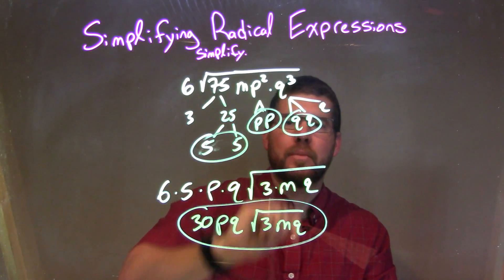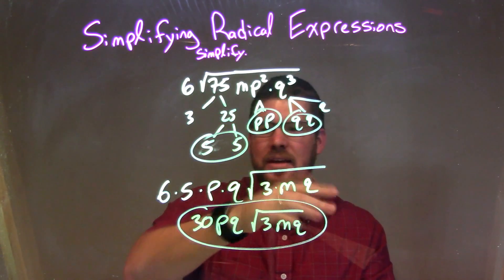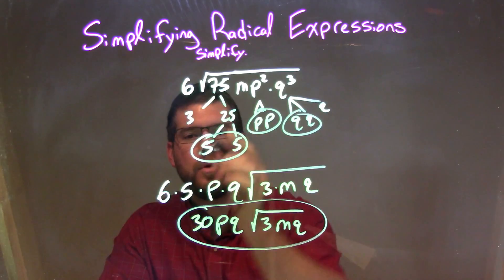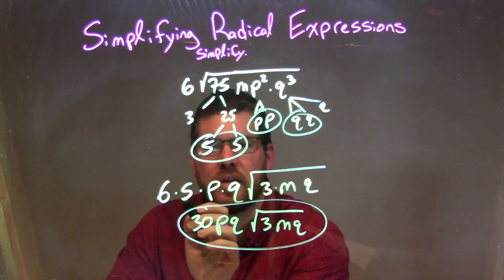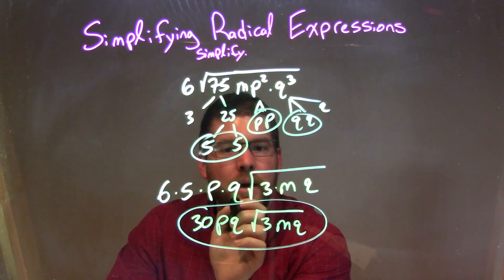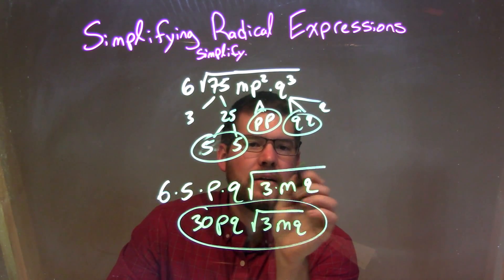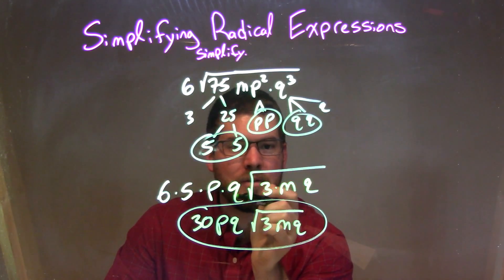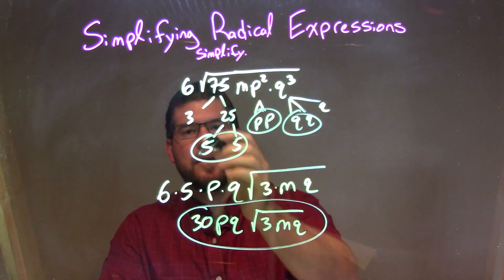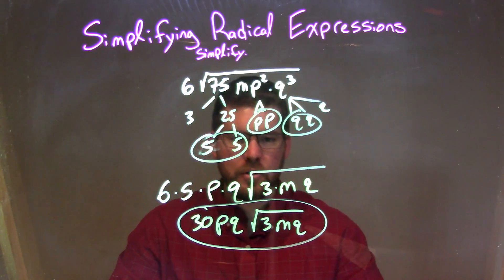I had a pair of 5s, a pair of p's, and a pair of q's. A pair on the inside is an individual on the outside, so when I rewrote this, I had 6 times one of my pairs — 5 — times p times q. And then inside the square root was what was left — what was not paired up: the 3, the m, and then a single q.